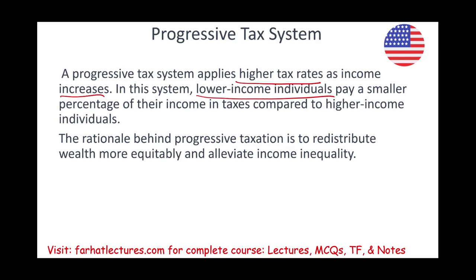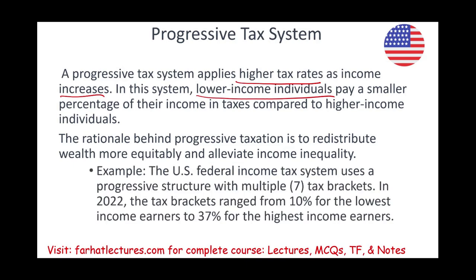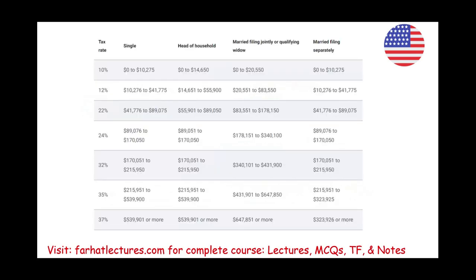For example, the U.S. system is a progressive tax system with seven tax brackets. In 2022, those brackets ranged from as low as 10% to as high as 37% for the highest income earners. The brackets are 10%, 12%, 22%, 24%, 32%, 35%, and 37%. This is the 2022 tax bracket — these change every once in a while.